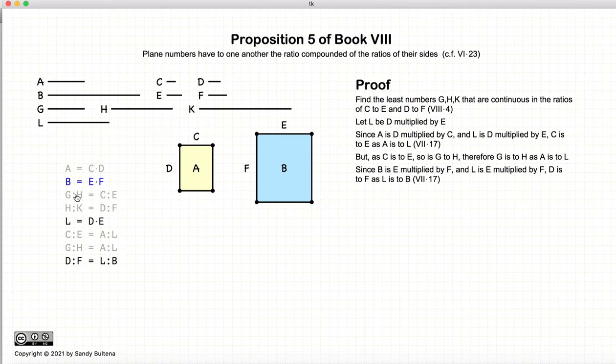Now, we're going to look at B to L. And again, if we cross out E, we have that L to B is equal to D to F, or D to F equals L to B. And since H to K is equal to D to F, and D to F is equal to L to B, H to K equals L to B.